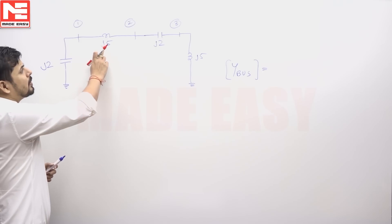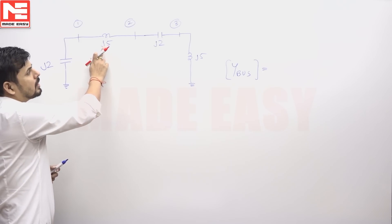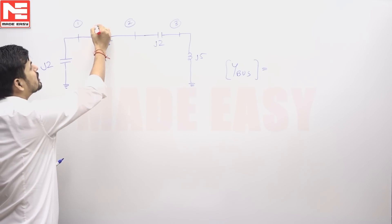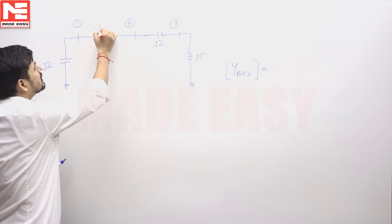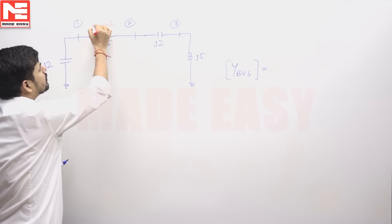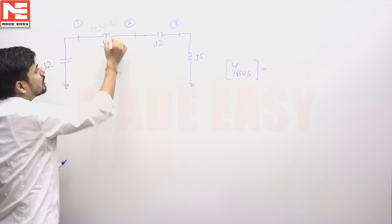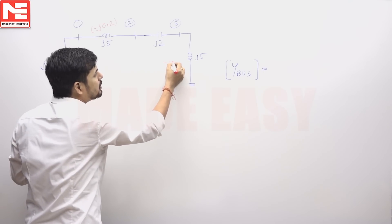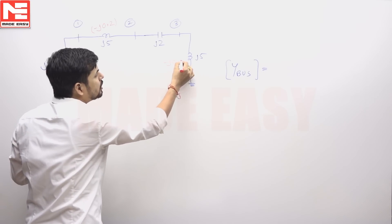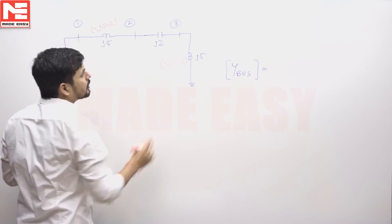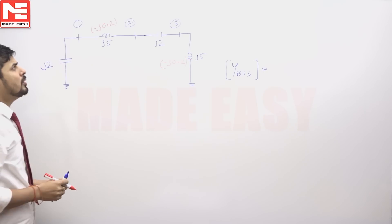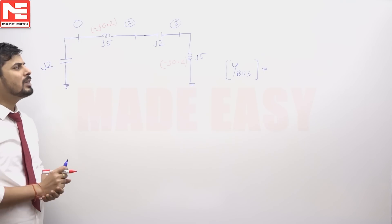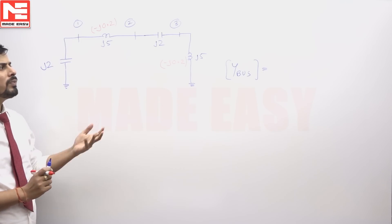By inverting we can find the admittance for this inductor, which will simply be j0.2. For this inductor also the admittance will be j0.2. So we now have the admittances of all the branches and we can form the Y-bus matrix.